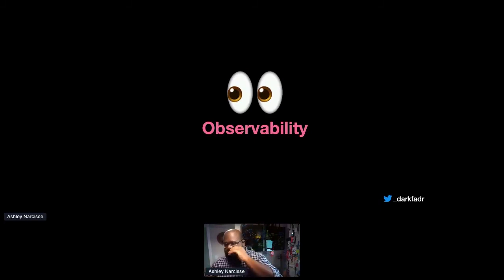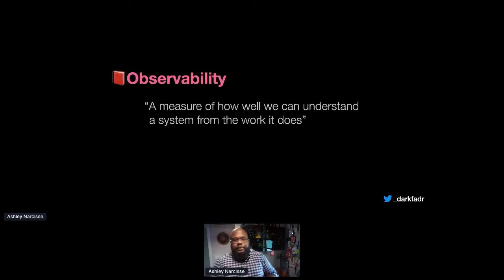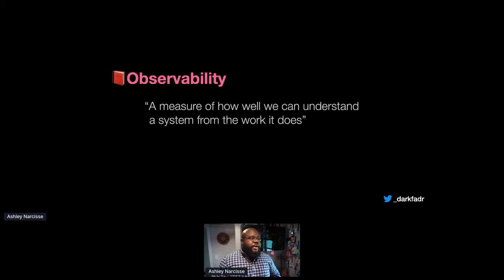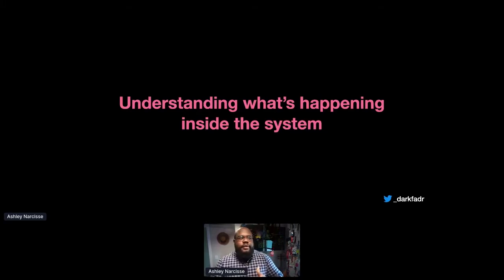Observability is a concept borrowed from mechanical engineering or control theory. My spin on it is: a measure of how well we can understand a system from the work that it does. Based on the output it's providing, we can measure whether a thing is working well or it isn't. It really boils down to understanding what's happening inside the system. We have existing tools in place to solve this problem, but within the GraphQL space it's still very much in a weird limbo phase.